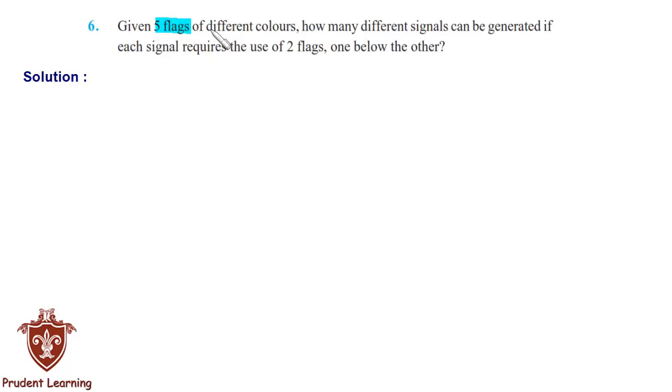Given 5 flags of different colors, how many different signals can be generated if each signal requires the use of two flags, one below the other?